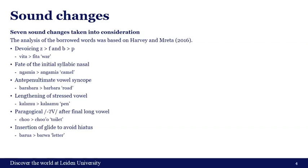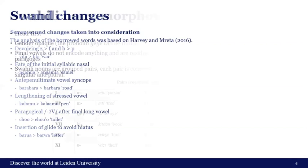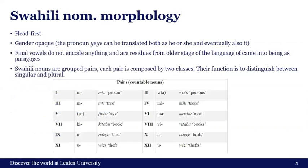The seventh sound change is quite regular: it's an insertion of a glide to avoid hiatus or a complex vowel cluster. So from 'barua' you get 'barwa'. This means the morphology is quite interesting.